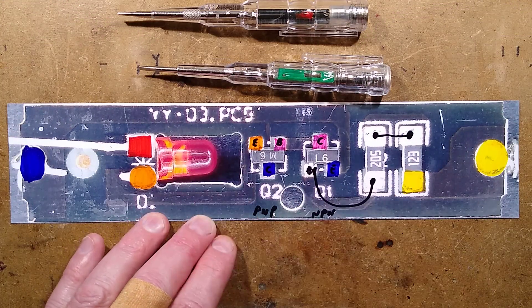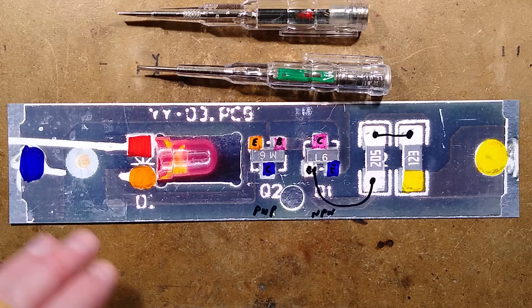I prefer bigger resistors. Anyway, we've got those two resistors, we've got the two transistors, the LED, and I shall show you the schematic for this.